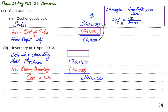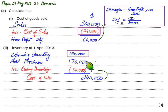We can now find the opening inventory figure by reverse working. We start with cost of sales, add back the closing inventory that is usually deducted, and subtract purchases that is usually added, to get opening inventory. As a check: if we add opening inventory and purchases that gives 290,000, and deducting closing inventory gives cost of sales of 240,000.